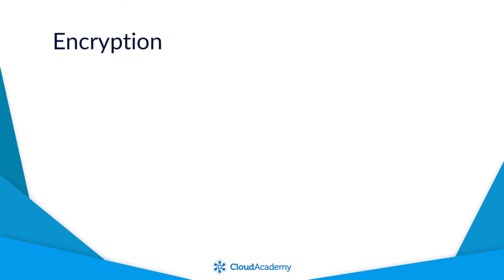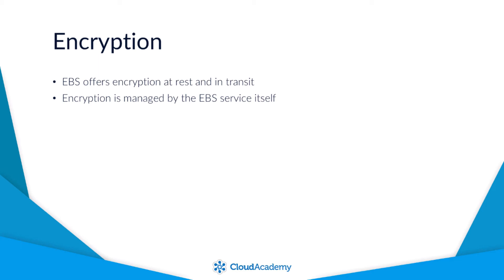One great feature of EBS is its ability to enhance the security of your data, both at rest and when in transit, through data encryption. This is especially useful when you have sensitive data, including personally identifiable information, stored in your EBS volume, and you may be required to have encryption from a regulatory or governance perspective. EBS offers a very simple encryption mechanism — you don't have to worry about managing the data keys yourself. All you are required to do is select if you want the volume encrypted or not during its creation via a checkbox.